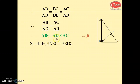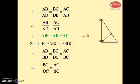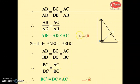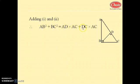Second: triangle ABC is similar to triangle BDC — again by similarity in right angle triangle, corresponding sides are in proportion. We take base upon base equals hypotenuse upon hypotenuse: BC upon DC equals AC upon BC. By cross multiplication, BC squared equals DC into AC. This is equation number 2. Now we add equations 1 and 2: AB squared plus BC squared equals AD into AC plus DC into AC.